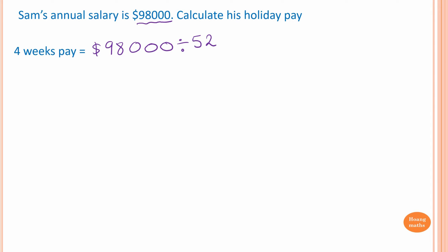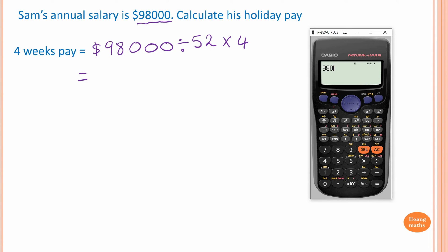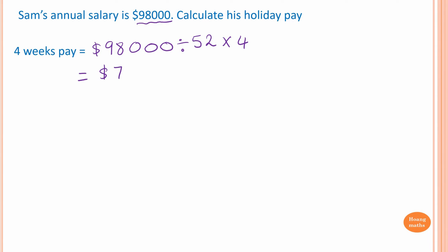Then I multiply by four to get four weeks pay. Ninety-eight thousand divided by 52 times four equals seven thousand five hundred and thirty-eight dollars and forty-six cents — rounded to two decimal places. That is Sam's four-week pay.